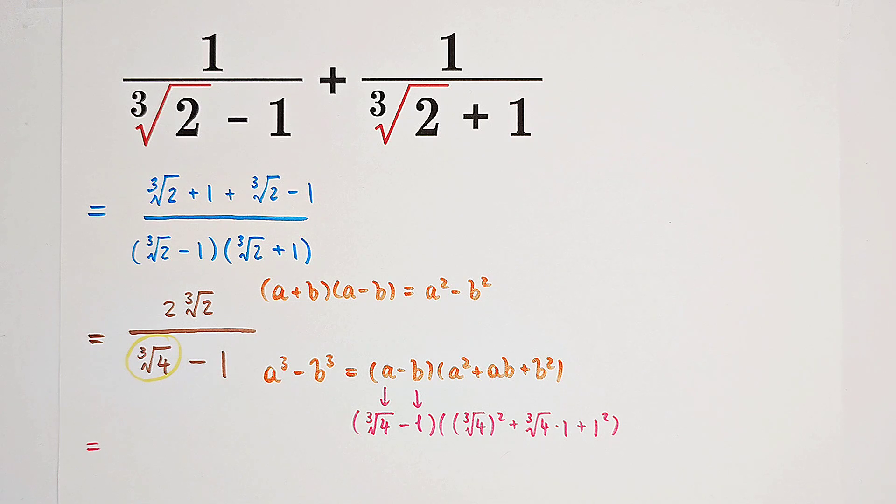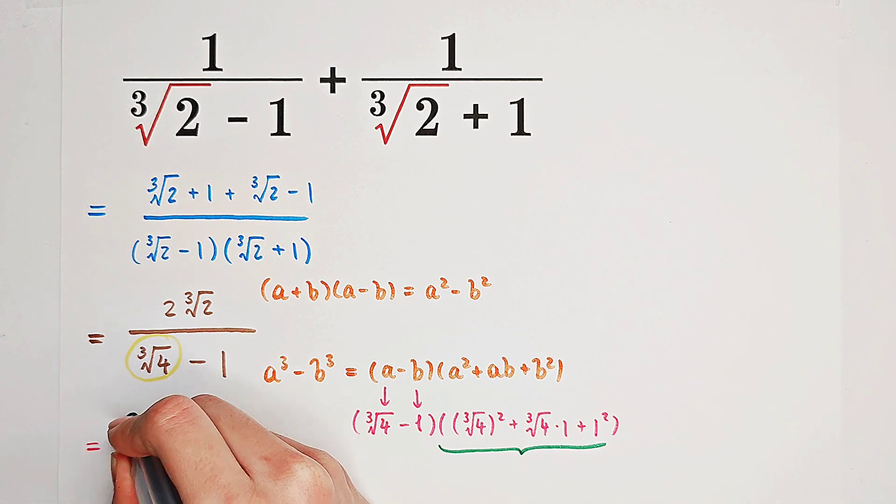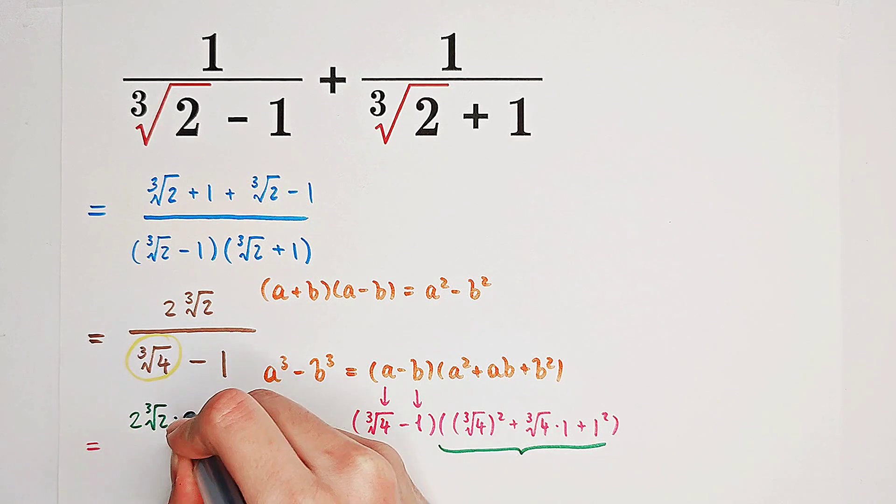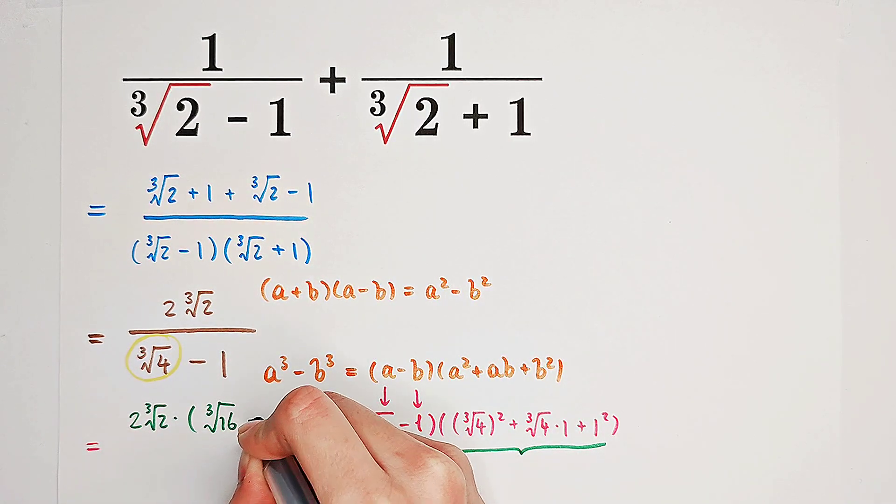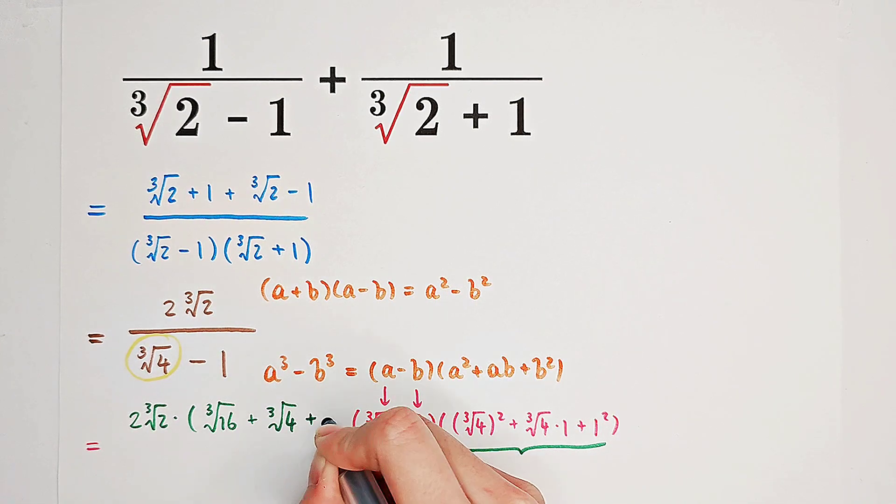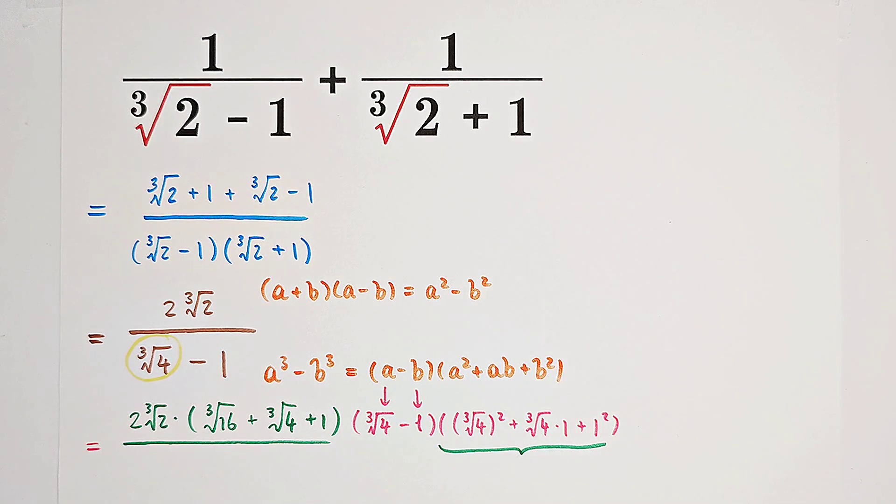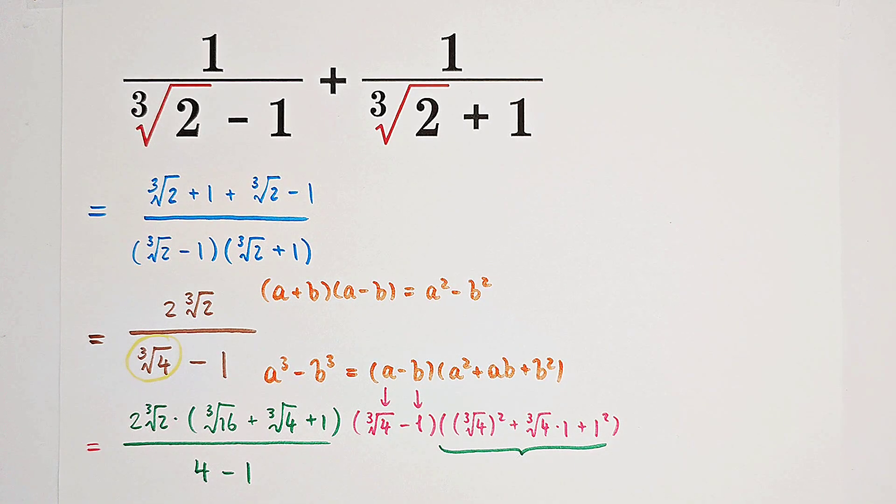So now, we can multiply this term on the numerator and on the denominator simultaneously. So it's going to be 2 times cube root of 2 times, this one is the cube root of 4 squared is 16, plus cube root of 4, and then plus 1. This is our new numerator. And our new denominator will turn to this one times this one. And that is cube root of 4 cubed, which is 4, minus 1 cubed, which is 1. So our denominator will be very nice.